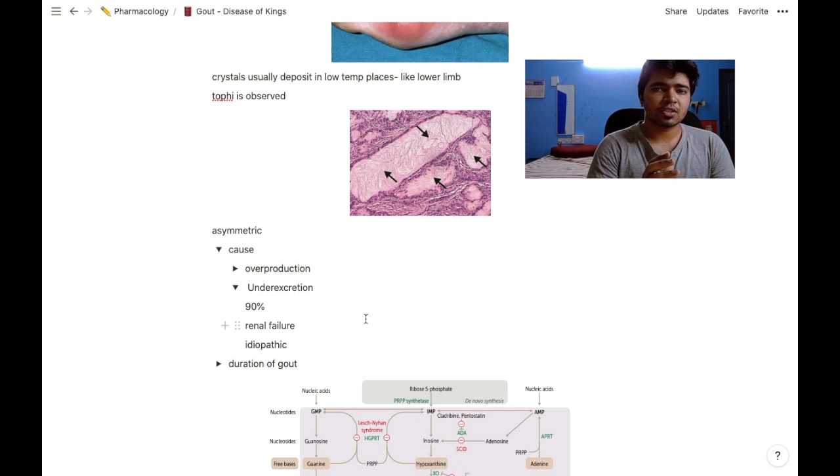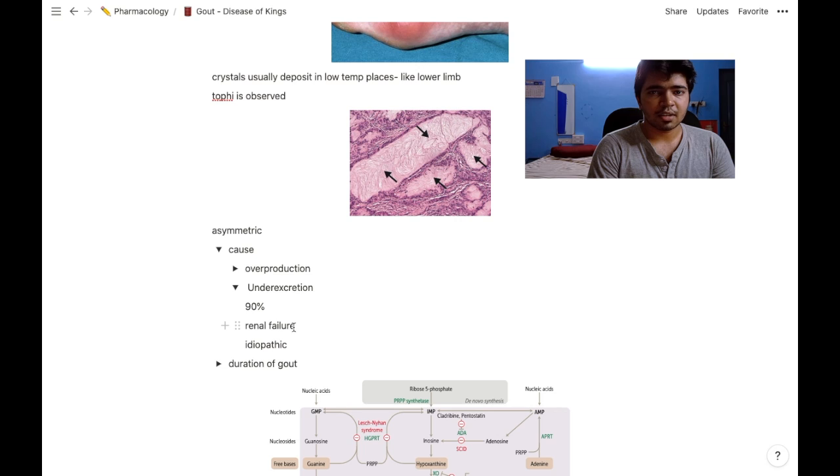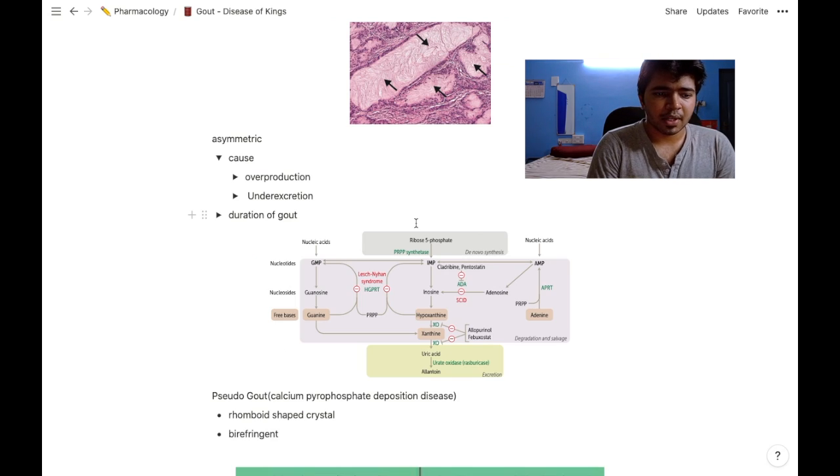In underexcretion of uric acid, 90% of patients come under this category. Most of the reasons are idiopathic. Some might have renal failure or a genetic or family history of gout.